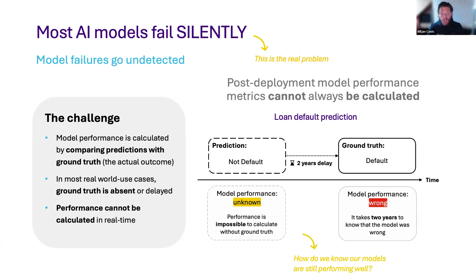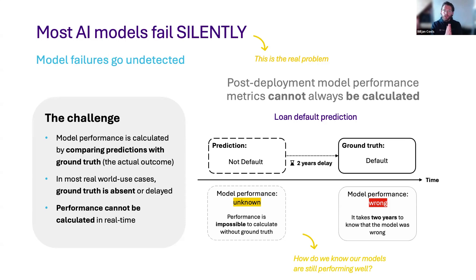The biggest problem today with machine learning models in production is that most of them fail silently. They start deteriorating and making bad predictions, and we don't necessarily know. The reason is that not in every machine learning use case can performance be measured or calculated. For instance, with a loan default prediction where we try to predict whether a customer will repay their loan in the next two years — we only really know at the end of the loan whether they were able to repay it. During the term of the loan we have no view on real performance. So if we cannot measure performance, how can we know that our models are still performing well?